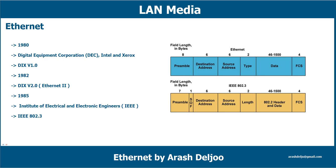Although 802.3 and DIX frames can coexist on the same cable, interoperability is not assured. Therefore, when discussing Ethernet, it is necessary to distinguish between the 802.3 frame and the DIX version 2.0 frame.